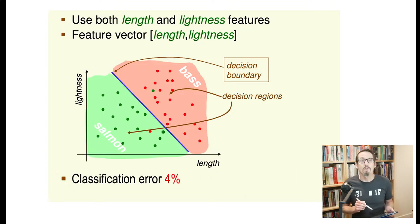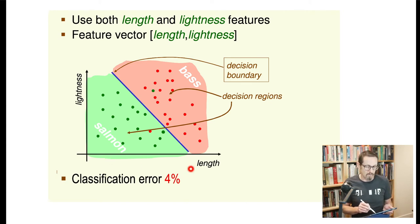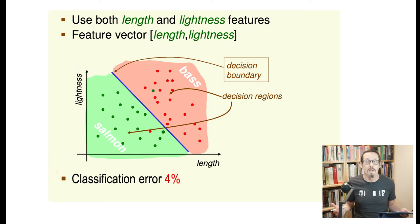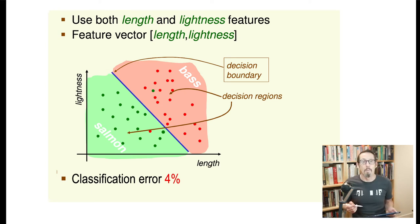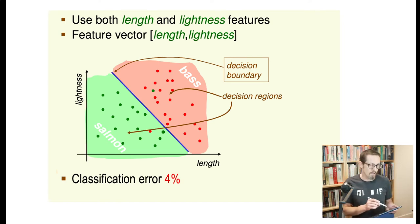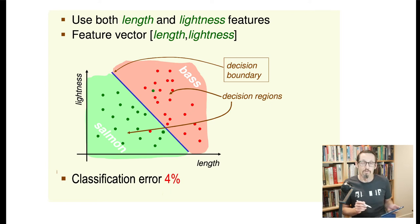Maybe we can do better by combining the two features. If we put length on one axis and lightness on the other, we turn what had been a one-dimensional classification into a two-dimensional problem. We can draw a line that best separates bass and salmon, and it turns out that with our training set, using a feature vector of length and lightness, we can get a classification error of 4%.